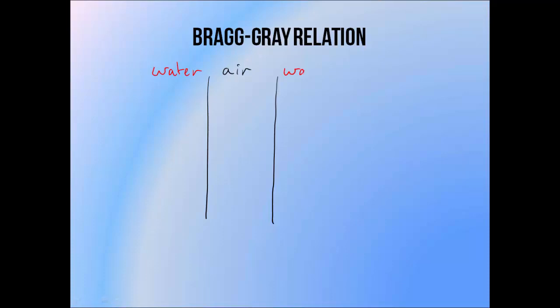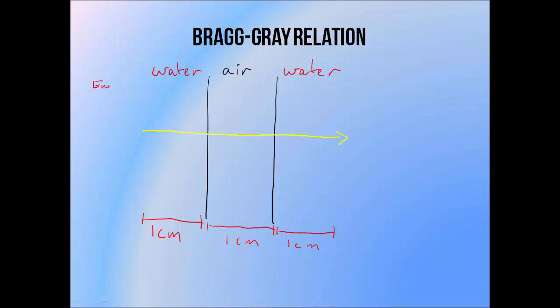Here we have a secondary electron crossing our ionisation chamber. It moves through a centimetre of water above the chamber, through our centimetre thick chamber, and a centimetre through the water behind the chamber. Let's assume for the moment that the electron loses energy steadily as it travels. The rate depends on the material, so here we'll say that it loses 1 MeV per centimetre in water, and 0.5 MeV per centimetre in air. It makes sense that it would lose less energy per distance travelled in air, since there are fewer things for the electrons to hit. And if we know how far this electron is travelling through each medium and the rate at which it loses energy per distance travelled, we can work out how much energy the electron is losing in each of these three areas.